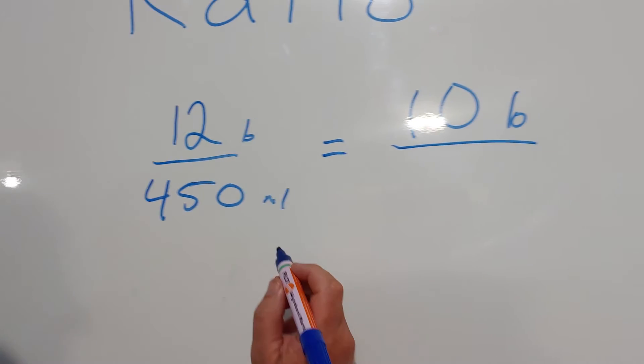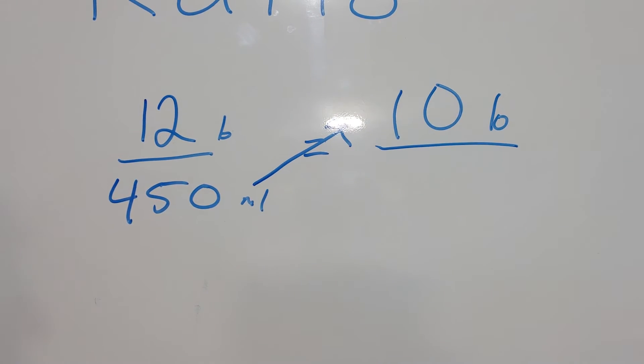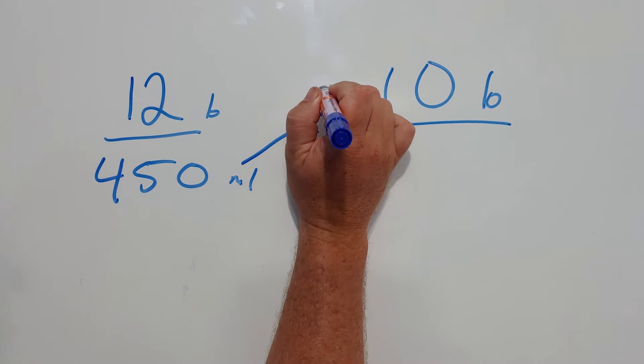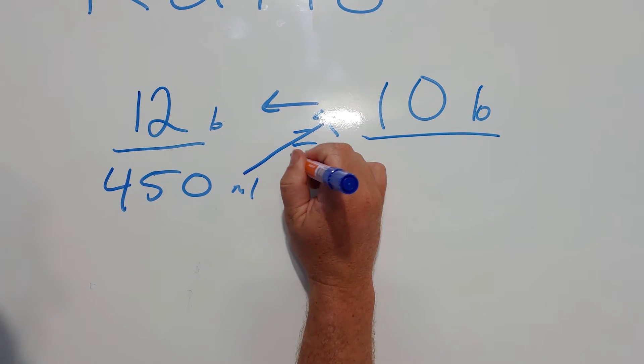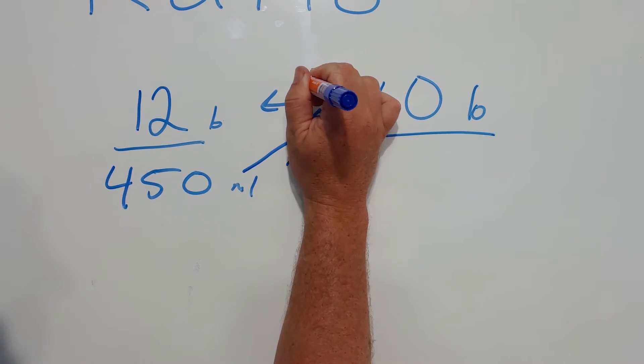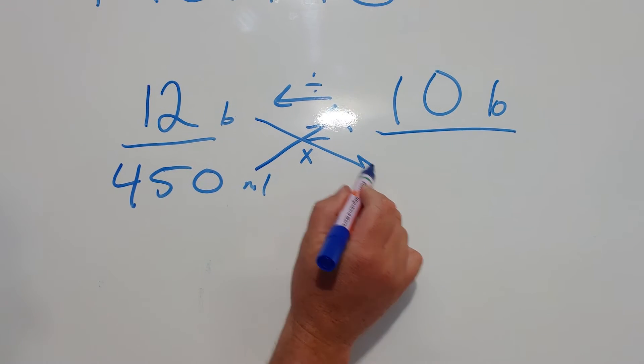How you do ratios is very easy. You just multiply that way and then divide that way. So this one is multiply, this one is divide, and then that will give you your answer.